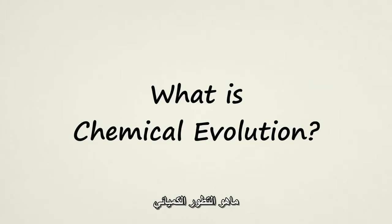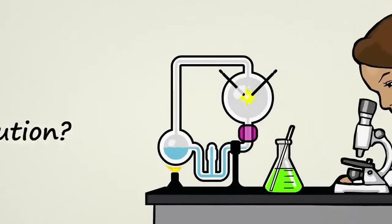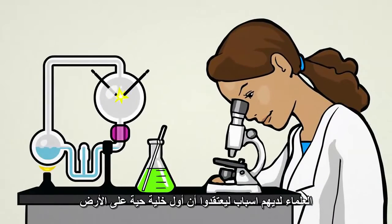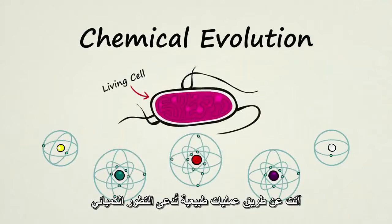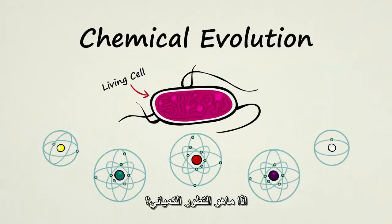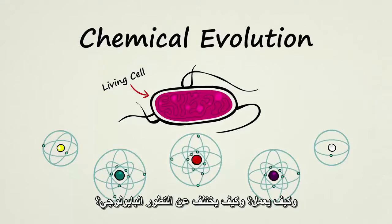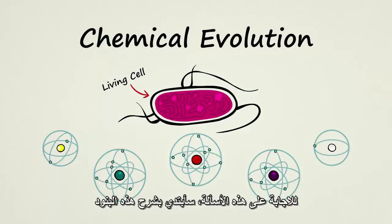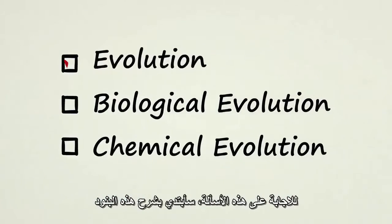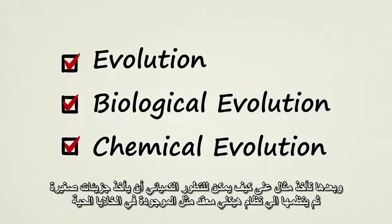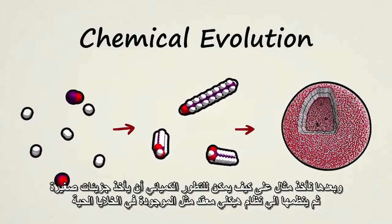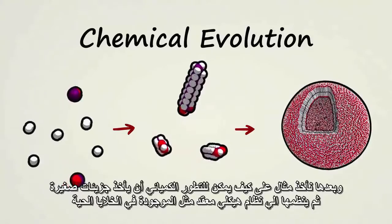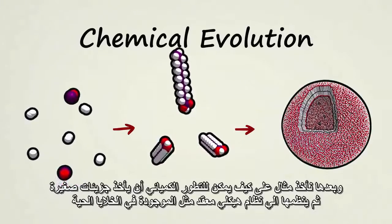What is chemical evolution? Scientists have reason to think that the first living cells on Earth came about through a natural process called chemical evolution. What is chemical evolution, how does it work, and how is it different from biological evolution? To answer these questions we'll start by first dissecting the terms and then look at an example of how chemical evolution can take simple molecules and organize them into complex structured systems similar to those found in living cells.